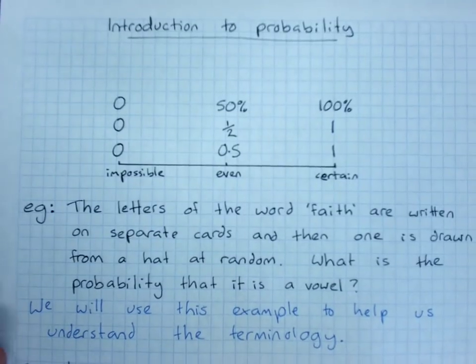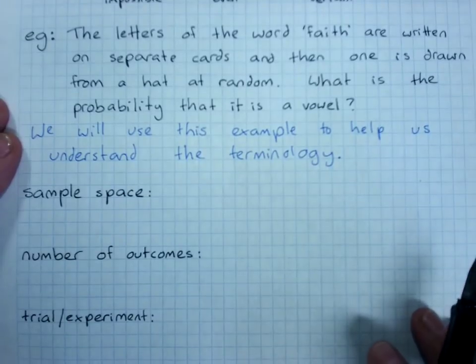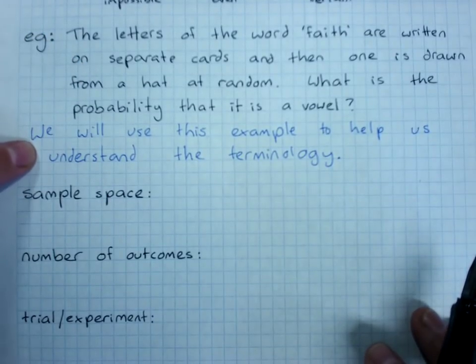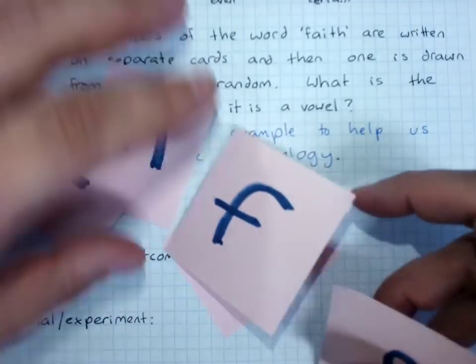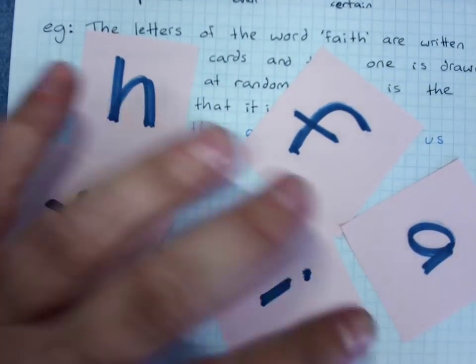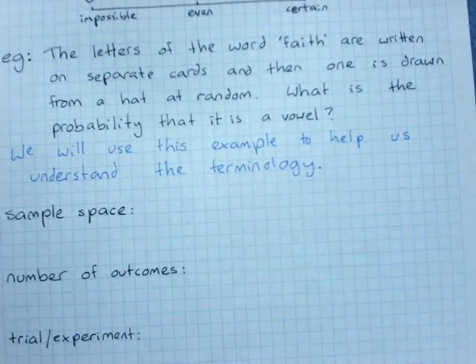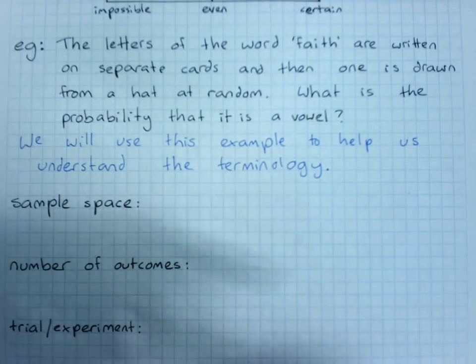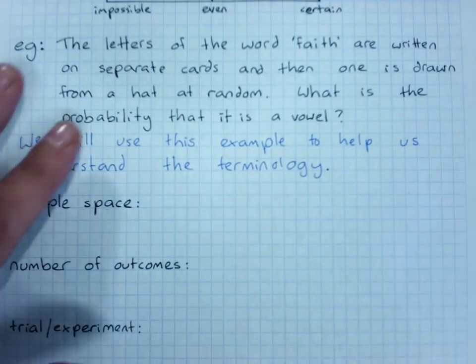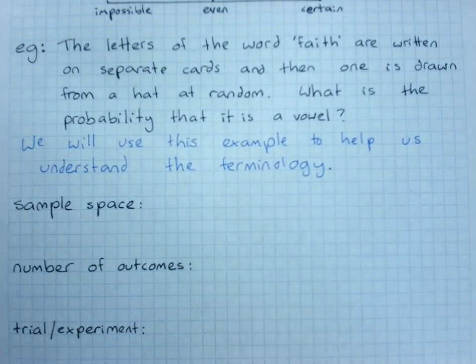Now we need to cover some terminology, some words that are used with probability, and we'll use this example to cover them. The letters of the word 'faith' are written on separate cards, and then one is drawn from a hat at random. What is the probability that it is a vowel? Now we'll answer the question, but we really want to use this example to talk about the terminology, the words that we use.